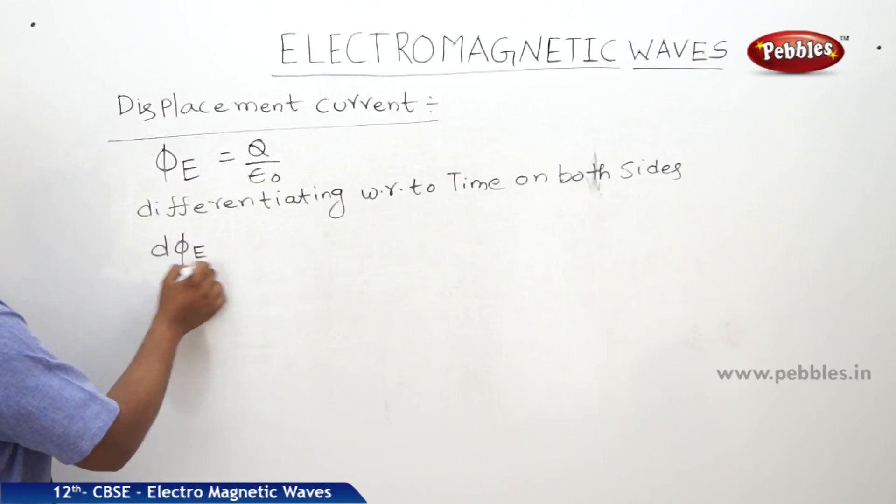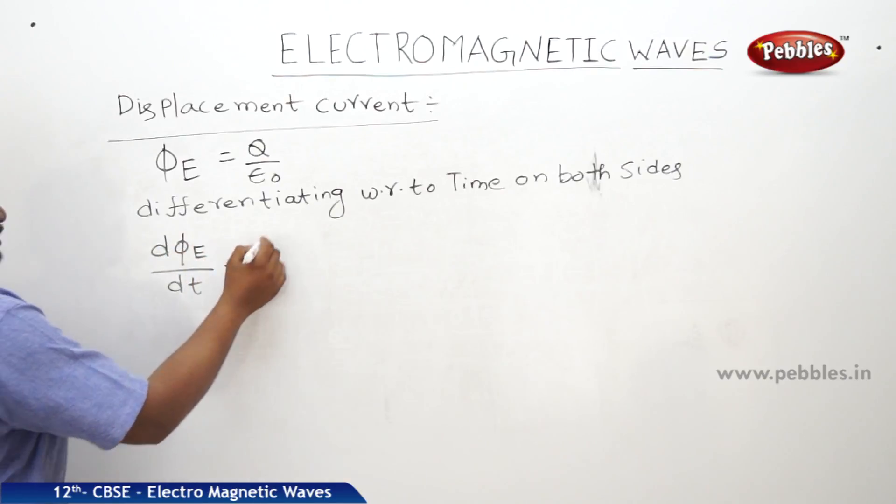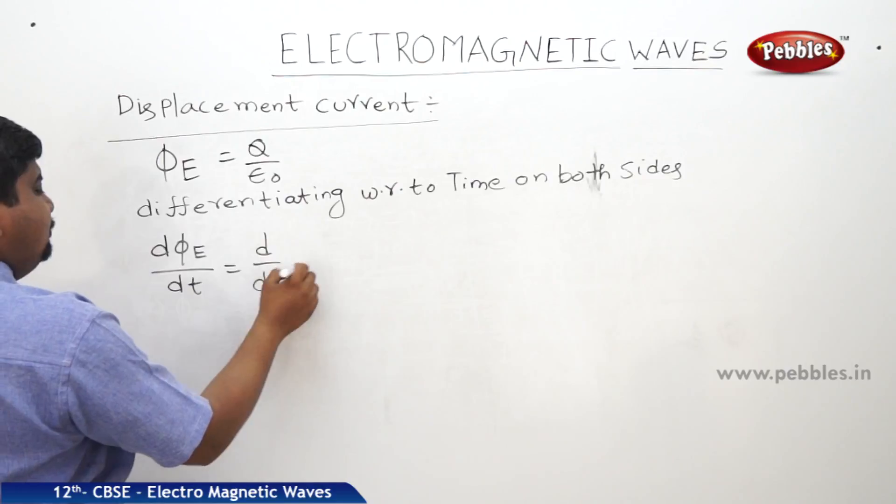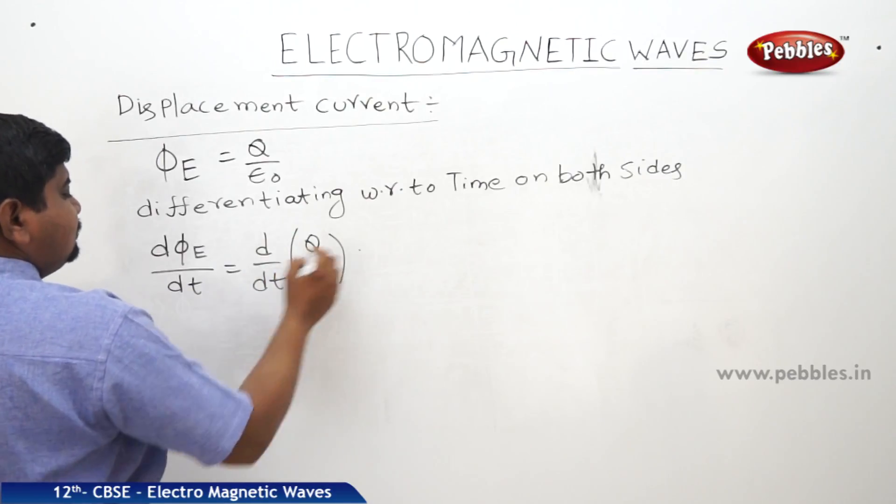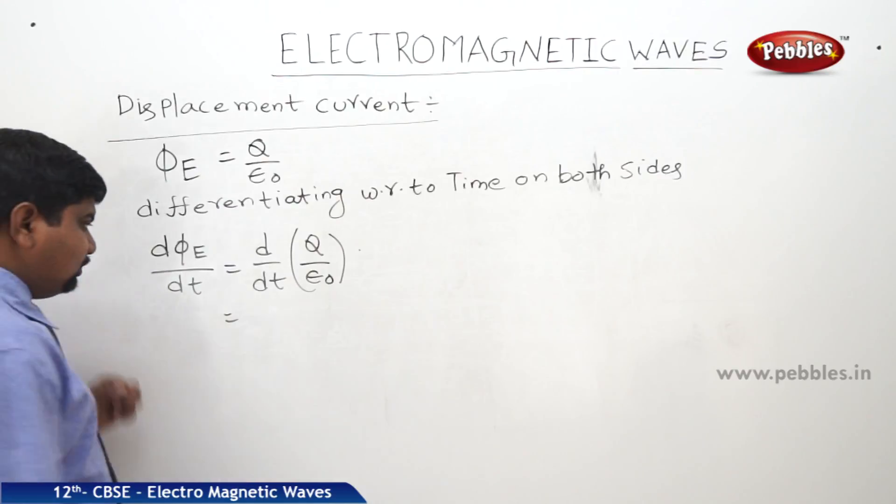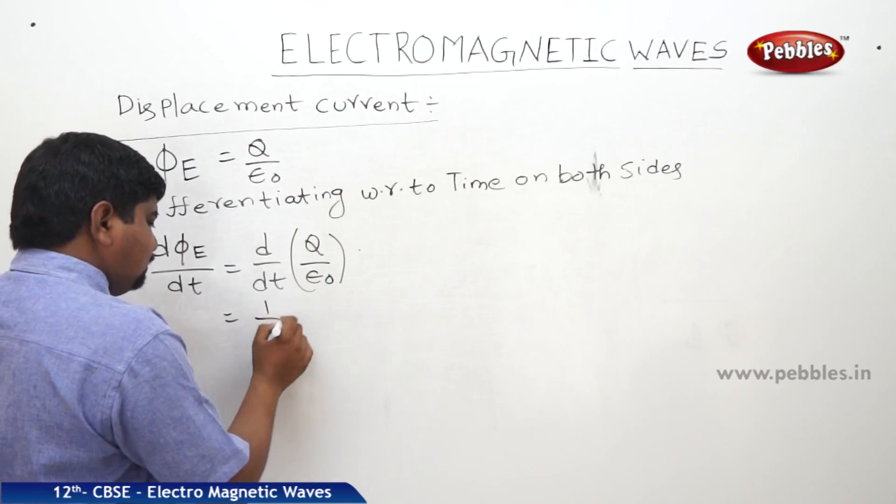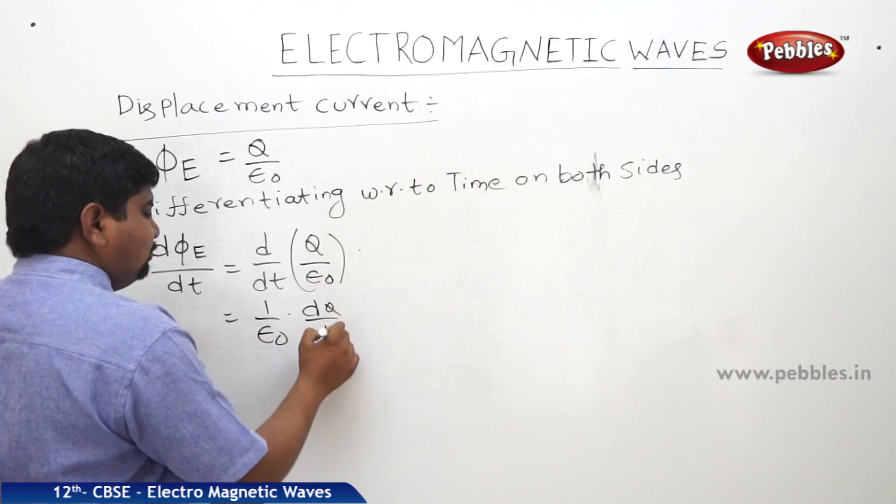So, d phi E by dt is equal to d by dt of q by epsilon naught. So, we can write 1 by epsilon naught into dq by dt.